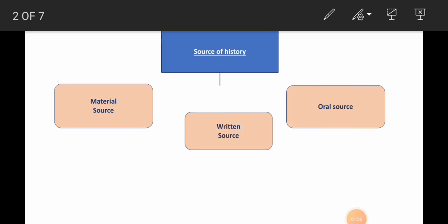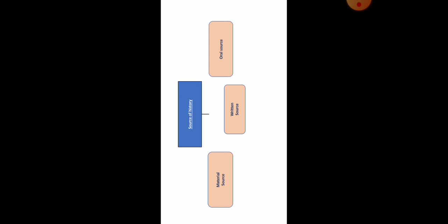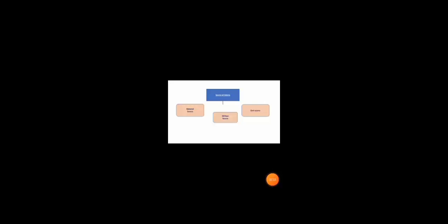These evidence, which stand the tests of reliability, are put in a proper sequence and a historical account is written. Thus, this is a scientific method of writing history. So students, we have seen what is history, history as a science, the scientific method of writing history, and the sources of history today. Thank you.